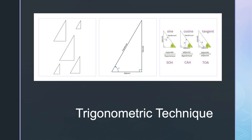Any modern scientific calculator includes functions for sine, cosine, and tangent. An easy technique for remembering these relationships is SOH-CAH-TOA: SOH indicates opposite over hypotenuse (sine), CAH indicates adjacent over hypotenuse (cosine), and TOA indicates opposite over adjacent (tangent). If the sides of the right triangle are known, the inverse of the trigonometric function is used to compute the angle — the arc sine, arc cosine, and arc tangent functions compute one of the angles if the lengths of any two sides are known.